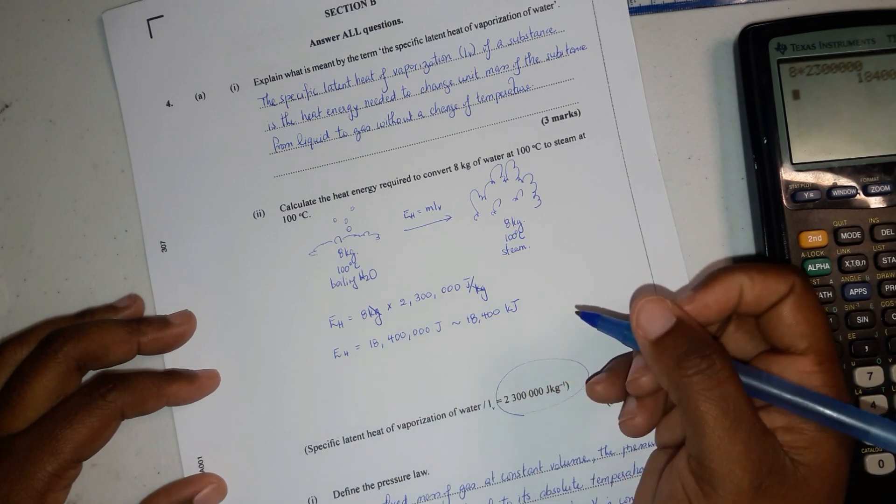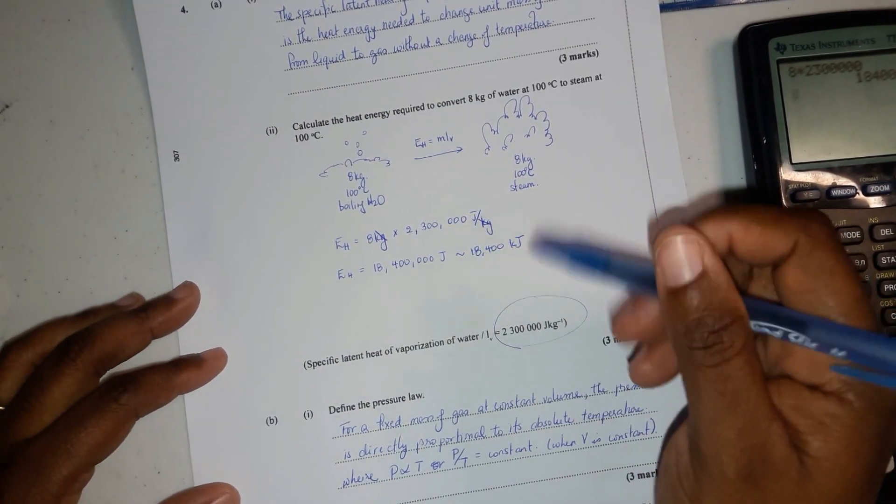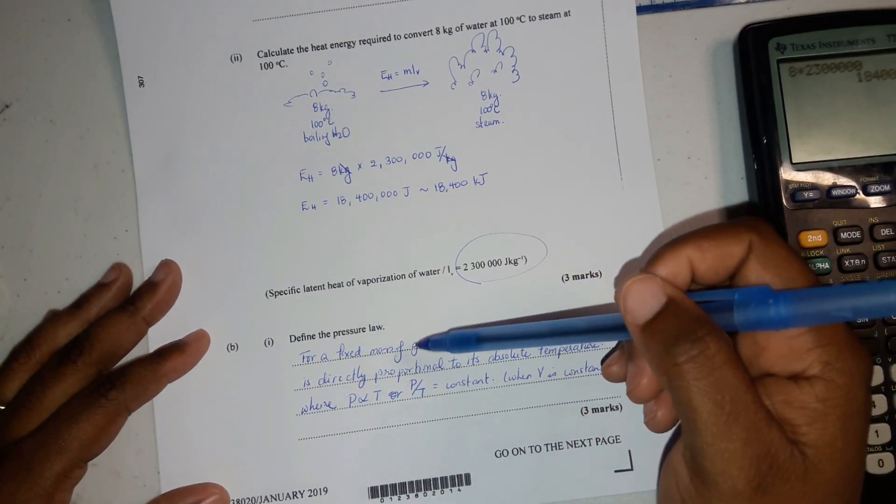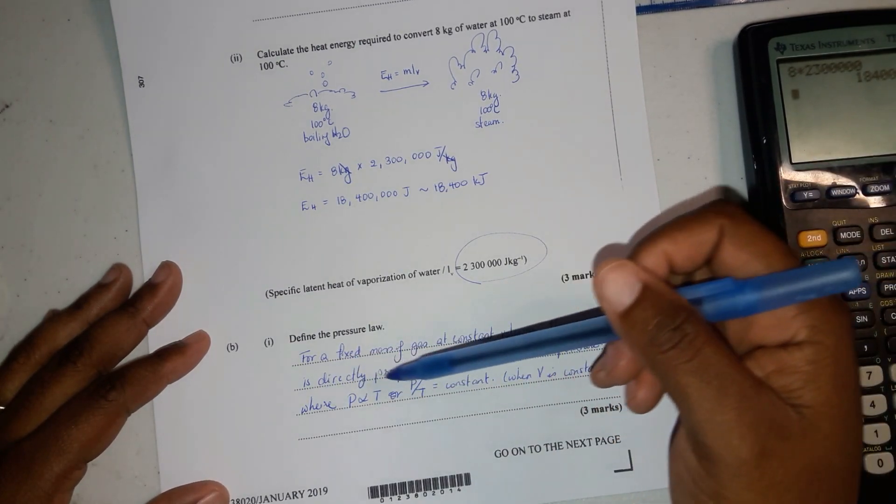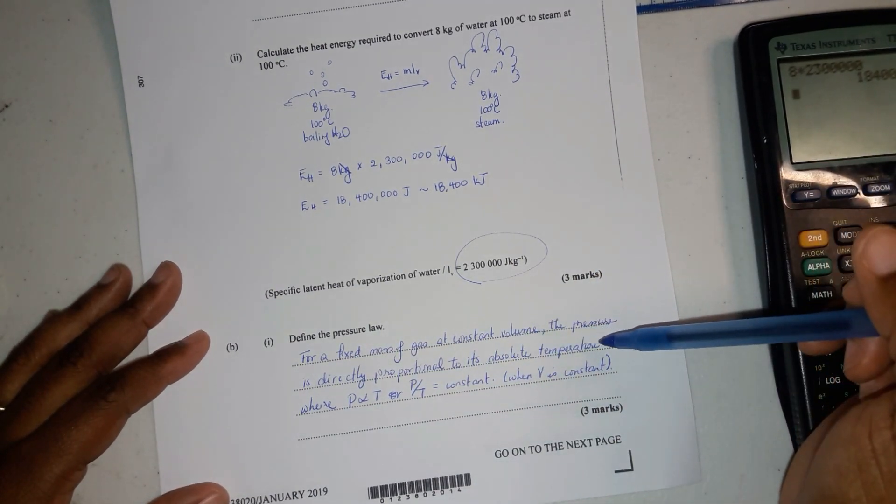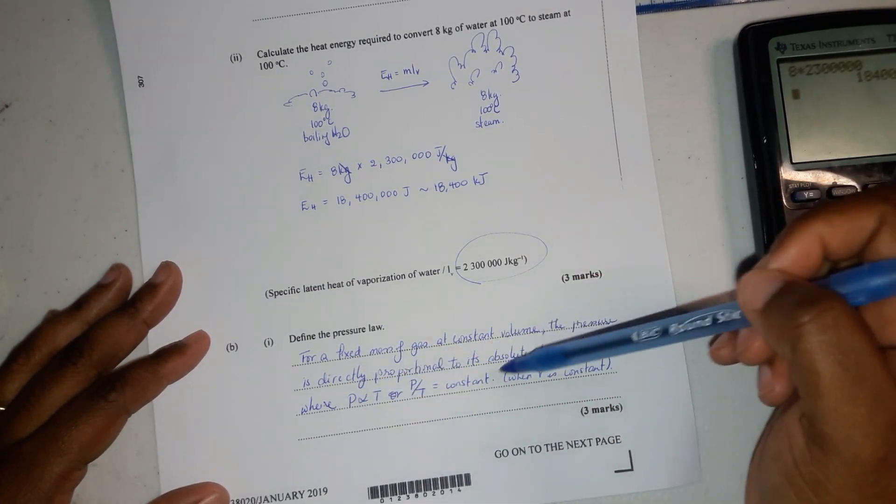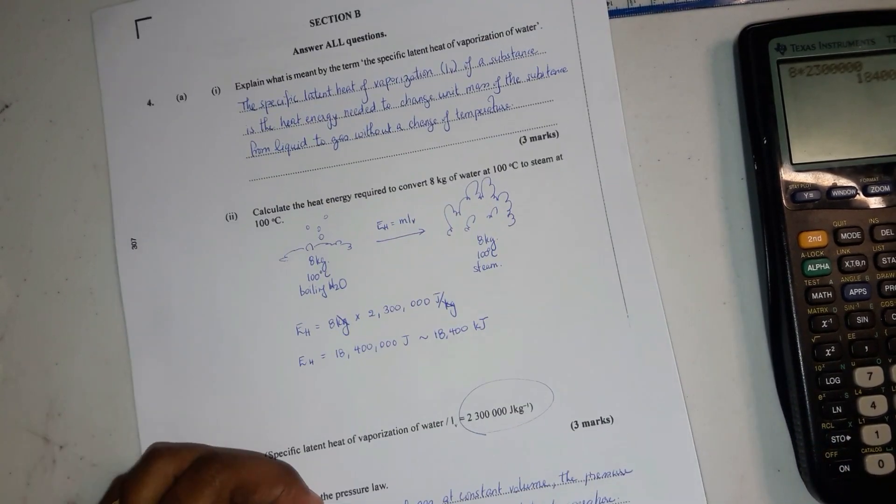8.4 megajoules. We'll just keep it this way. Now it says define the pressure law. For a fixed mass of gas at constant volume, the pressure is directly proportional to its absolute temperature, where you would write this notation right here which represents everything I just said.